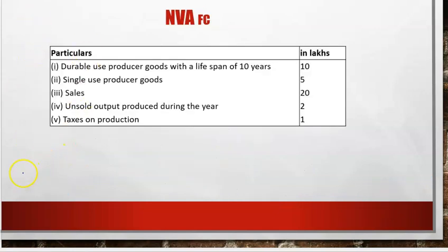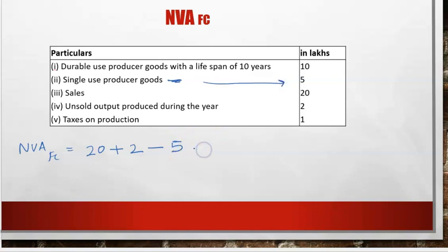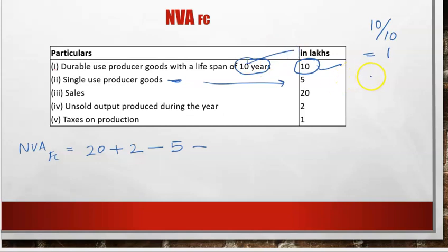Question 4: NVAFC calculated directly. NVAFC = Sales + Change in Stock − IC − Depreciation − NIT. Here, IC is single-use producer goods. Depreciation is calculated as: Asset Value ÷ Expected Life = 10 lakh ÷ 10 years = 1 lakh depreciation. NIT (taxes on production) = 1. So the answer is 22 − 7 = 15. This is a different type of question where you calculate depreciation from asset value and lifespan.